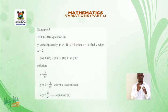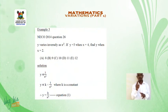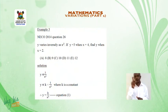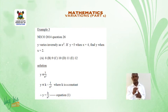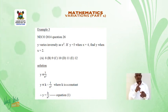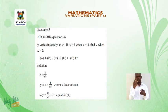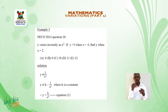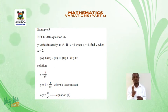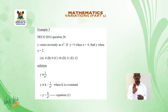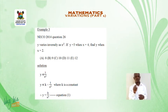Example 3. NECO 2014, Question 26. Y varies inversely as x squared. If y = 3 when x = 4, find y when x = 2. Options: a. 8, b. 9, c. 10, d. 11, e. 12.